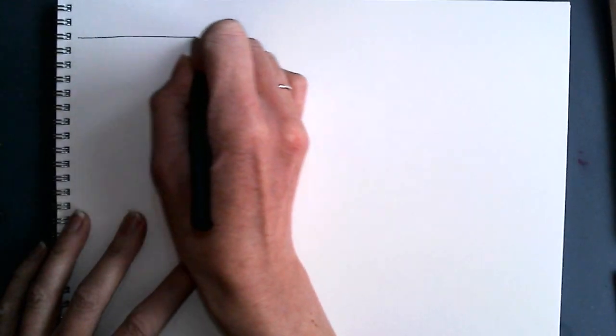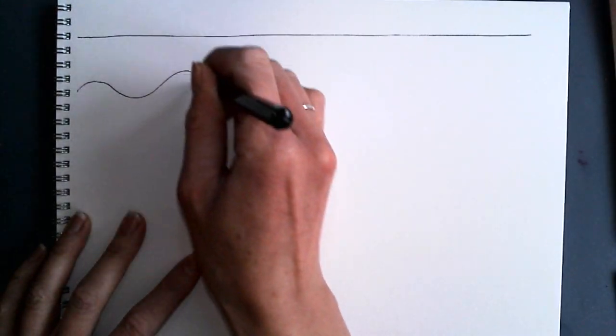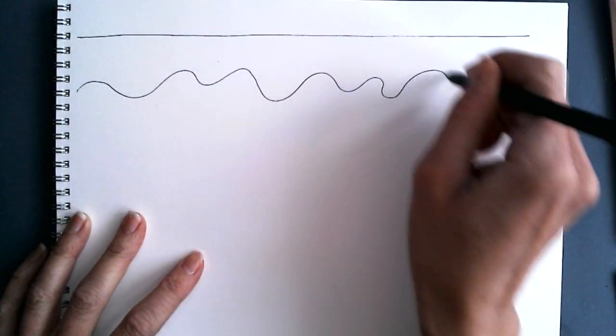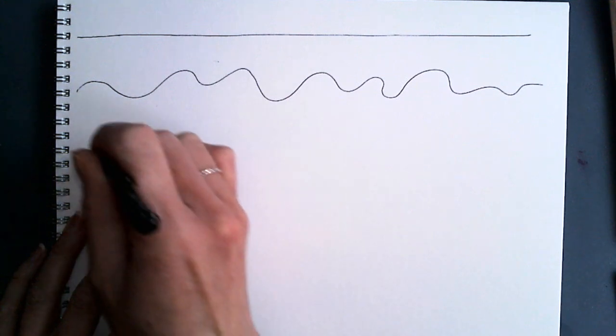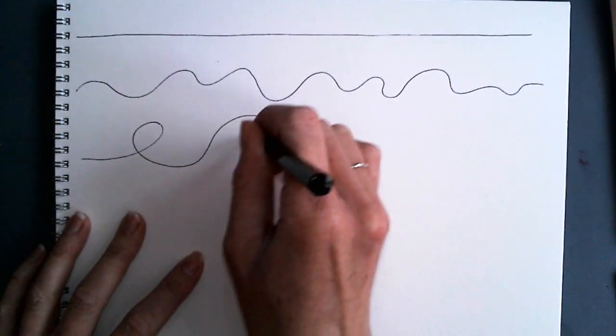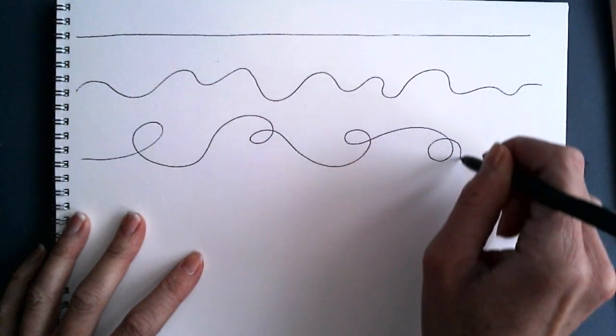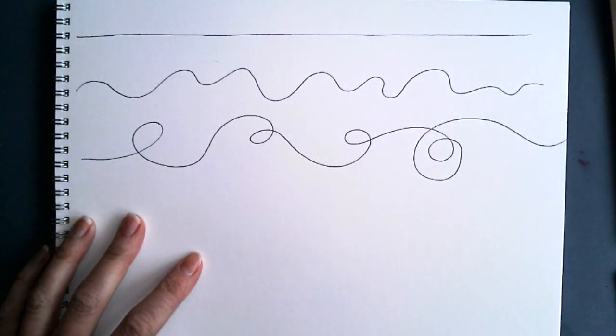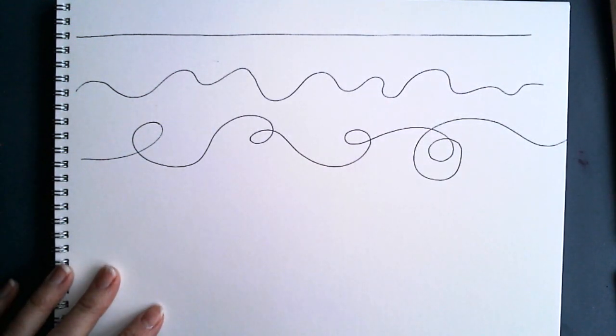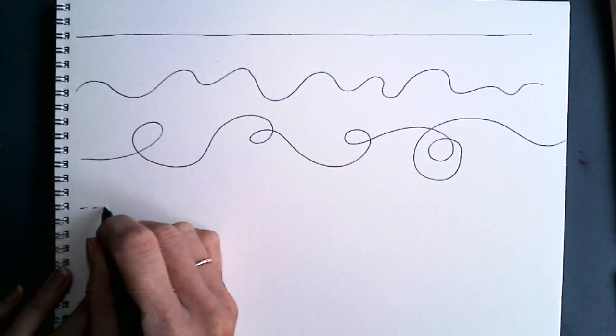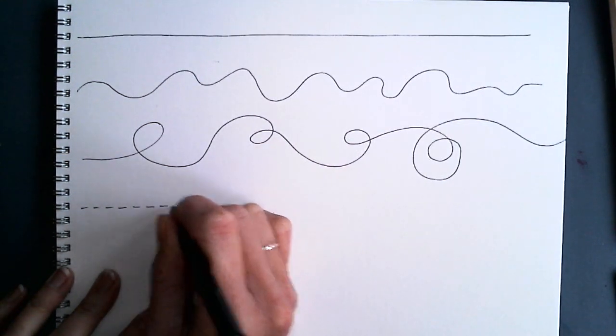A line can be straight. A line can be curvy. A line can loop around over and over.